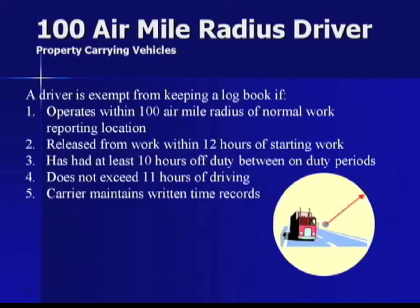The 100 air-mile radius driver exemption for property-carrying vehicles: you're exempt from keeping a logbook if you operate within 100 air miles of your normal work reporting location, are released from work within 12 hours, have had at least 10 hours off-duty between on-duty periods, don't exceed 11 hours of driving, and the carrier maintains written time records. All of these requirements must be met.